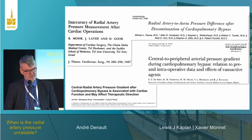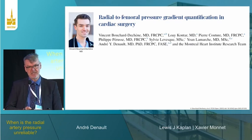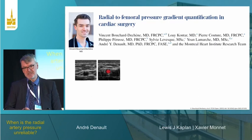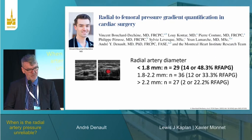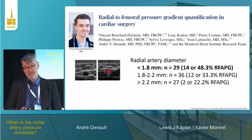This is our most recent study — a prospective study where we electronically recorded all measurements. We measured the size of the radial artery. If you have a small radial artery — less than 1.8 mm — about 50% of patients will have a significant radial-femoral artery pressure gradient, compared to patients with a radial artery diameter more than 2.2 mm.